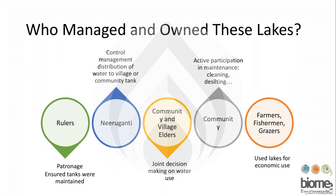Who managed and owned these lakes? There were rulers who ensured the tanks were maintained and made grants. There were Neerugantis — people who managed water flow, especially when lakes are in a sequence and overflow from one lake goes to another. They would decide how much water could be made available to a village or another tank by manipulating the outlet level — raising or lowering it — to manage water both for their village and the villages downstream.